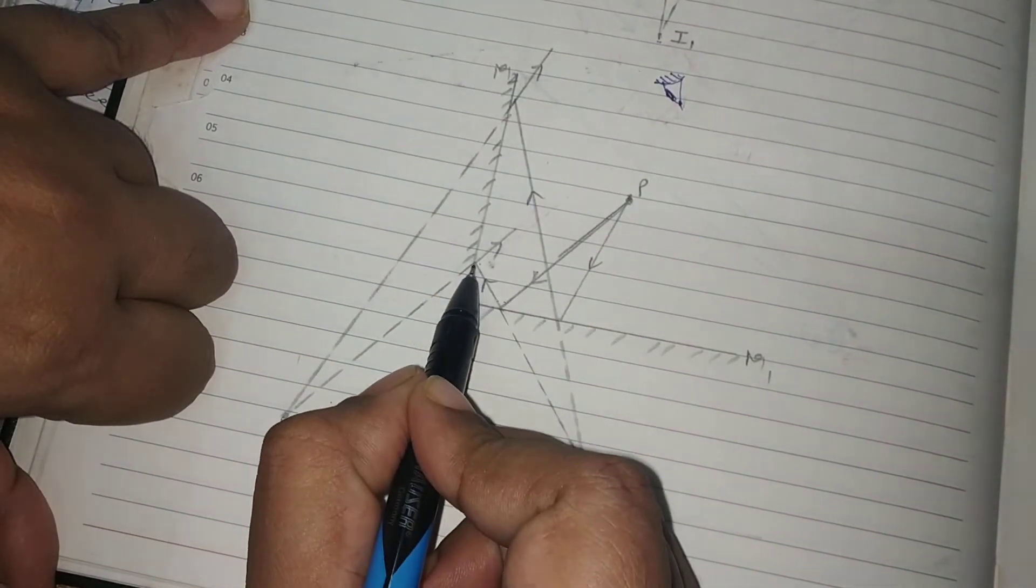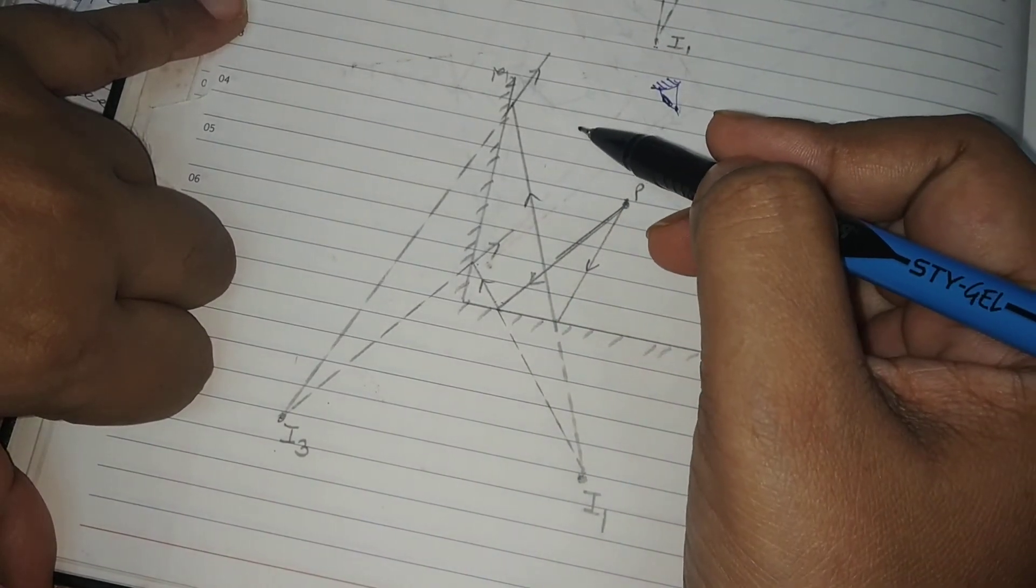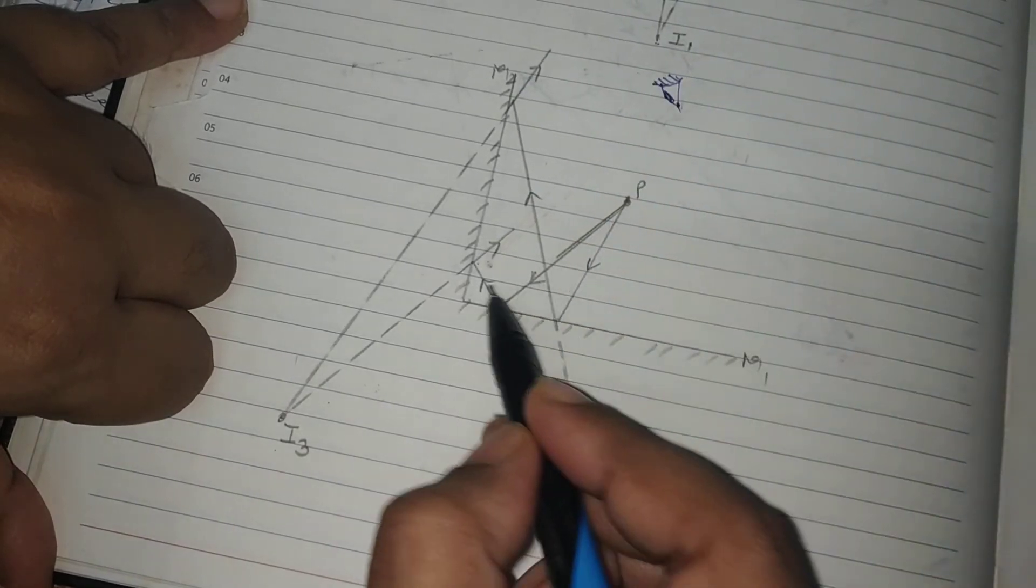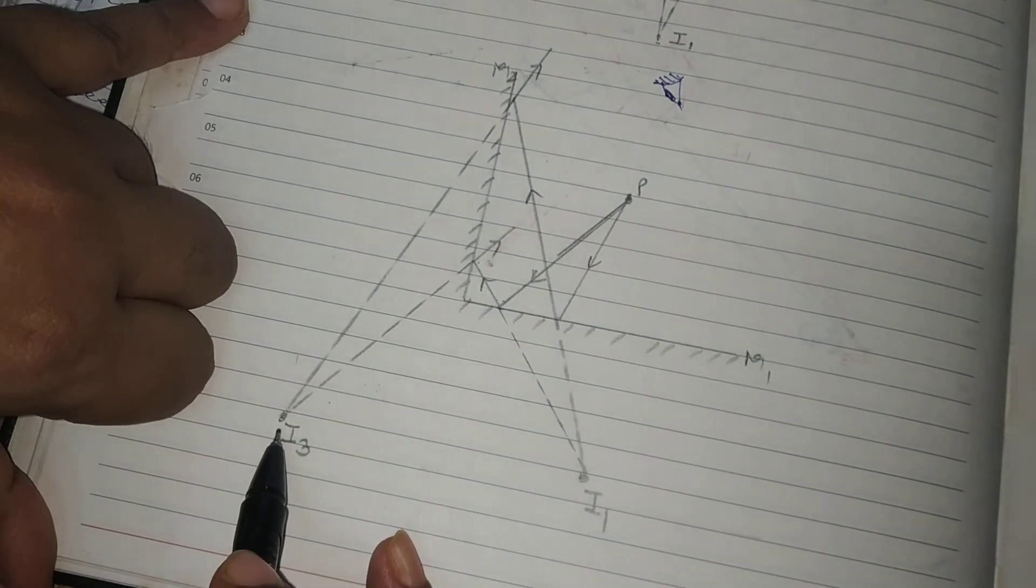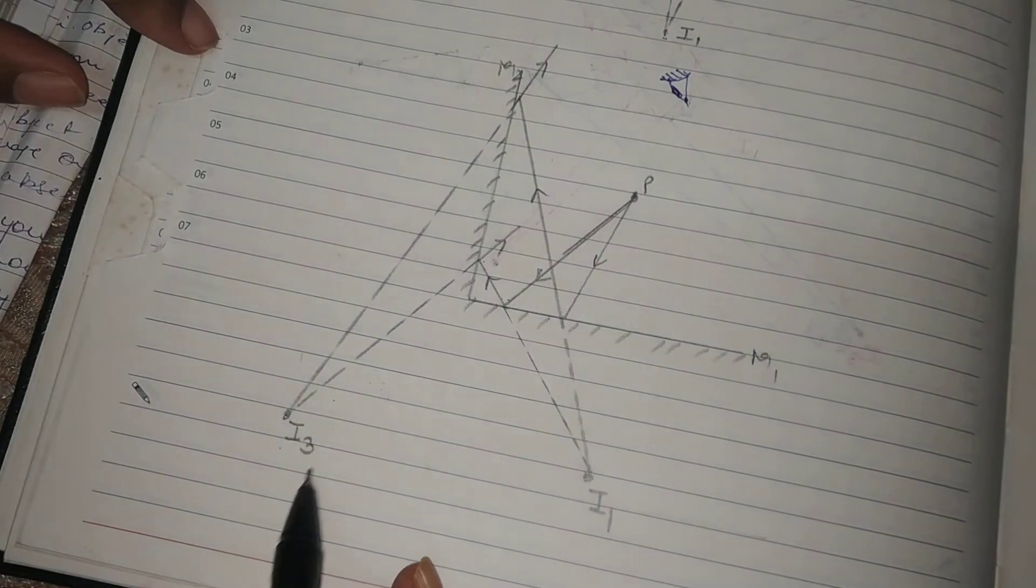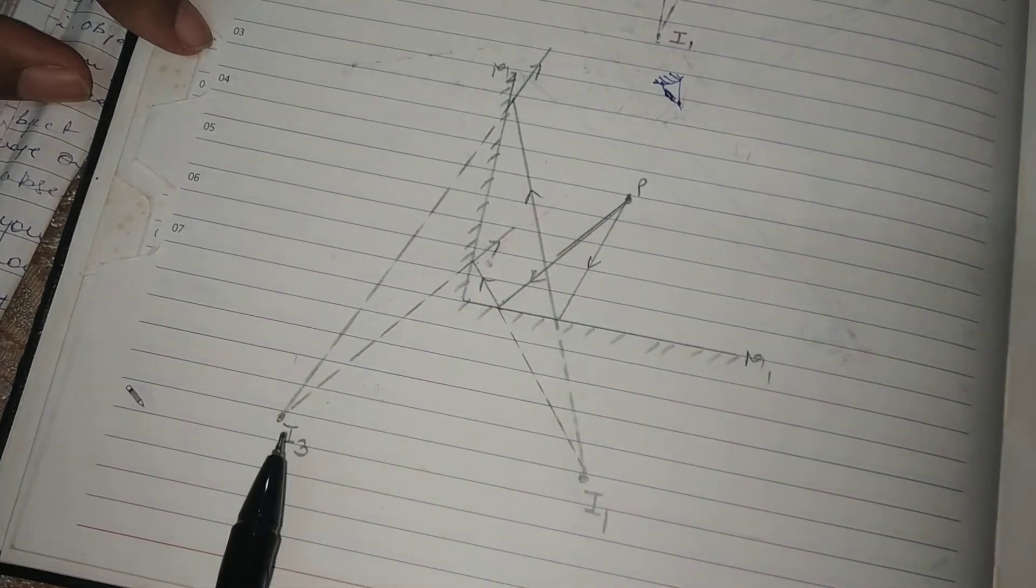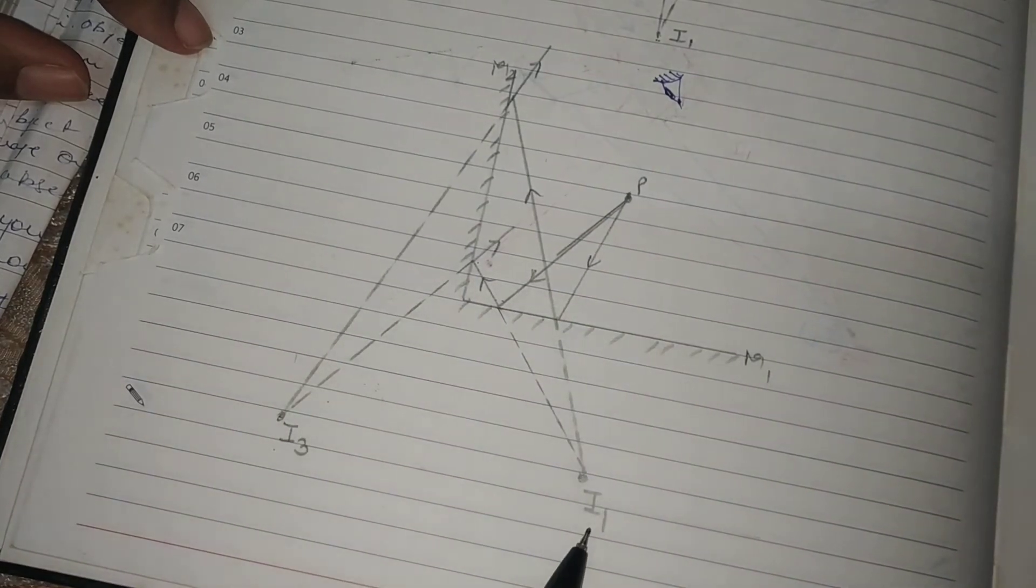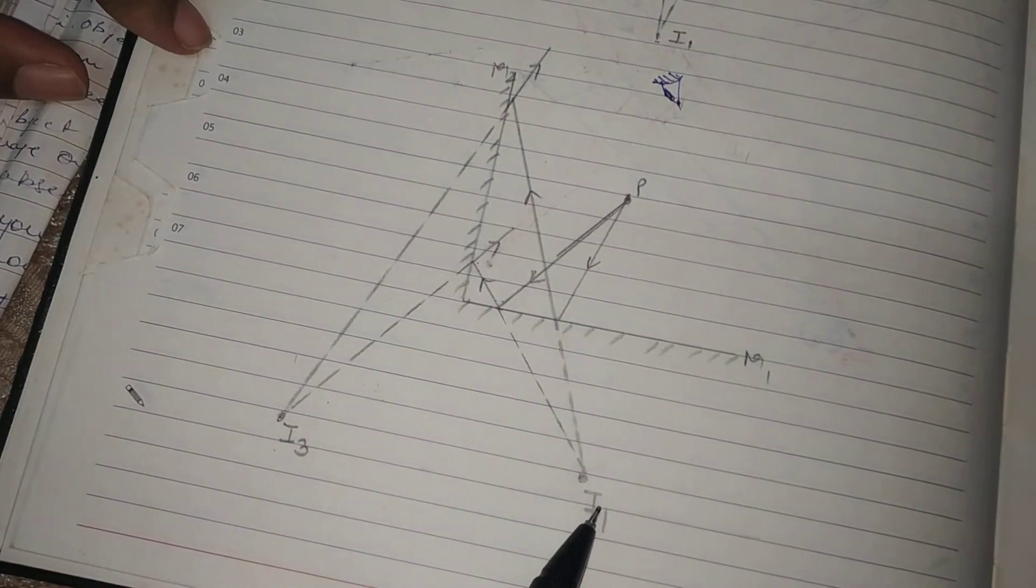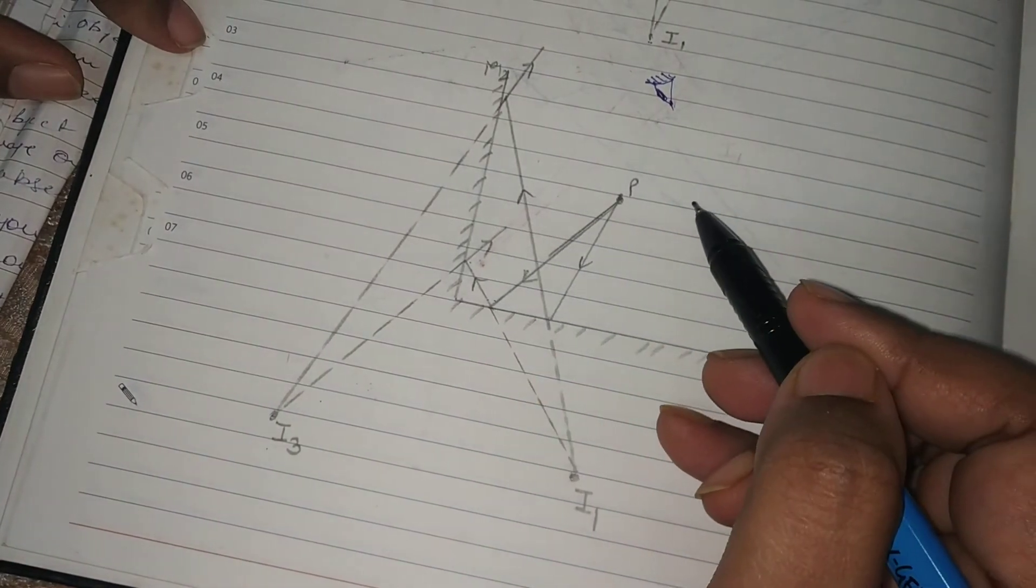So when these two reflected rays undergo reflection for the second time, that means reflection of the reflected rays are taking place here on the surface of M2, then these two reflected rays produce a figure over here. And I3, which is the image of the virtual object I1, that means image of already formed image is obtained here, and this has happened because of reflection of the reflected rays.